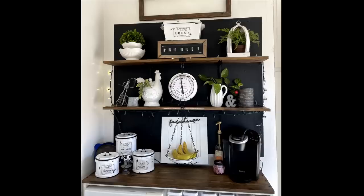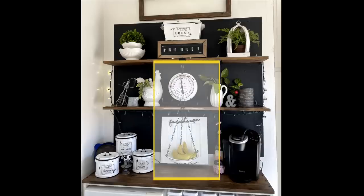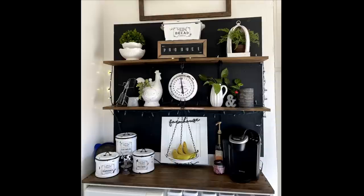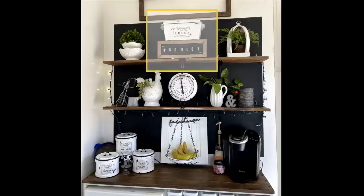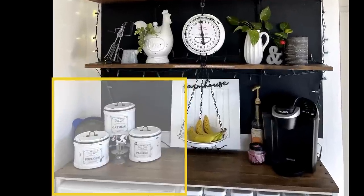I redid my coffee bar not too long ago and wanted to go with more of an antique vintage feel, so I made some dupes that were super affordable. The first one was this DIY scale which I did in a previous video. I've got the bread box coming soon. This week we're going to go over these canisters.